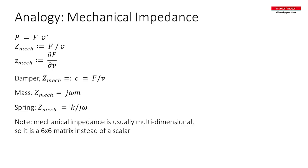For mechanical impedance, we apply the same framework. Force times velocity equals power, so again we split power into two quantities: force and velocity. We then divide force by velocity — we could also divide velocity by force, but by convention we divide force by velocity. That is the common definition, and we stick with that convention.